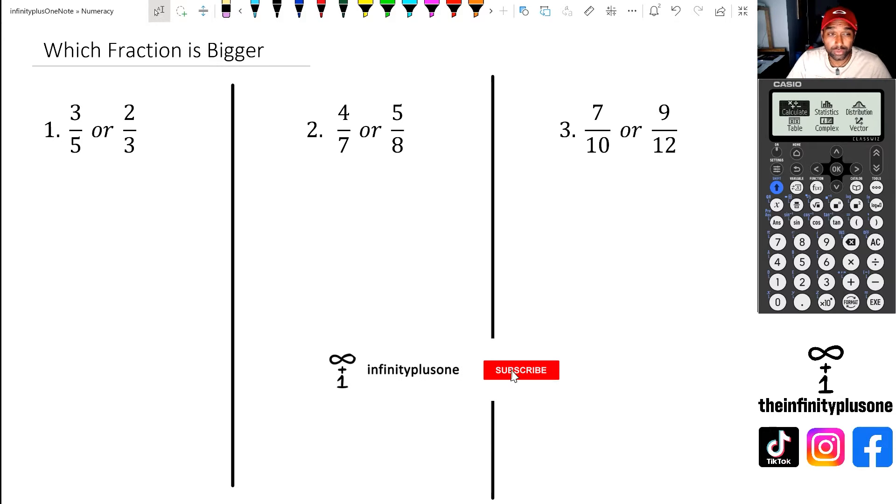So when we look at question one, we've got three-fifths or two-thirds, and we need to figure out which of these fractions is bigger. Now the best way to do that is to make sure that our denominators are the same numbers. So what we have to do in this case is figure out the lowest common multiple between three and five.